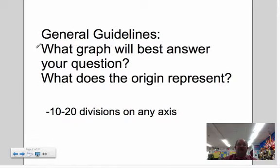General guidelines: what type of graph is going to best answer your question? You want to be able to look at a graph and say what the origin represents. Typically on any axis you want somewhere between 10 and 20 divisions. You know, the most you want is 20 tick marks on the axis. If you get much more than that, it's just crowded. I start by figuring out my range, divide by 20, and then I try to come up with a reasonable number that's going to be easy to replicate - some multiple of 10 or 25 or 100.